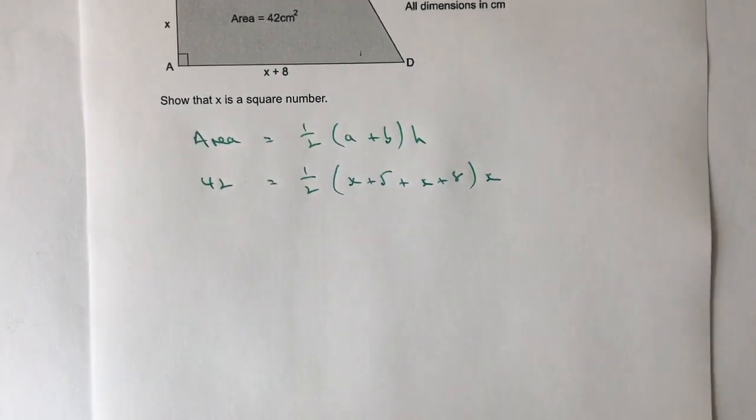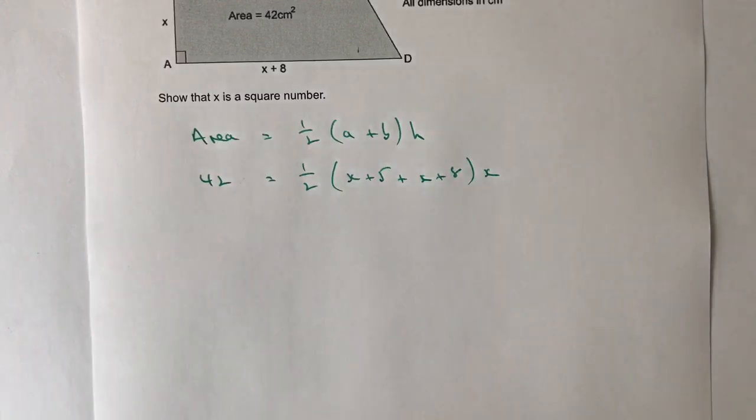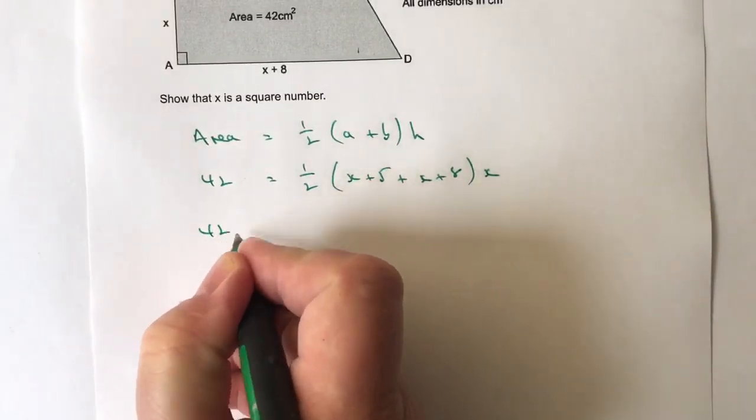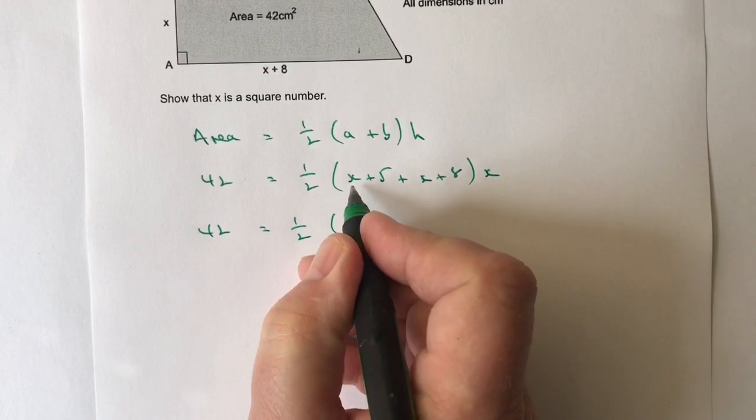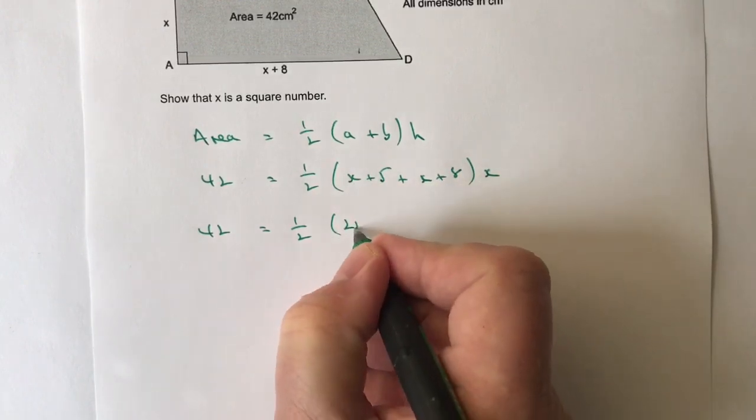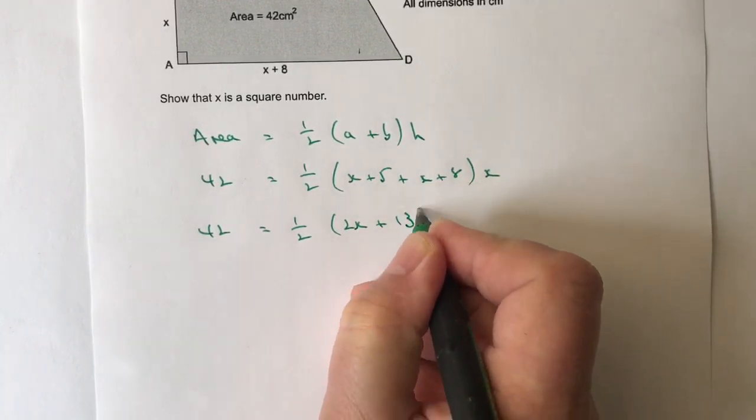So the first thing I'm going to do is I'm going to add the brackets together. So I've got 42 equals, I'll add the terms in the brackets. That's going to be 2x plus 13.